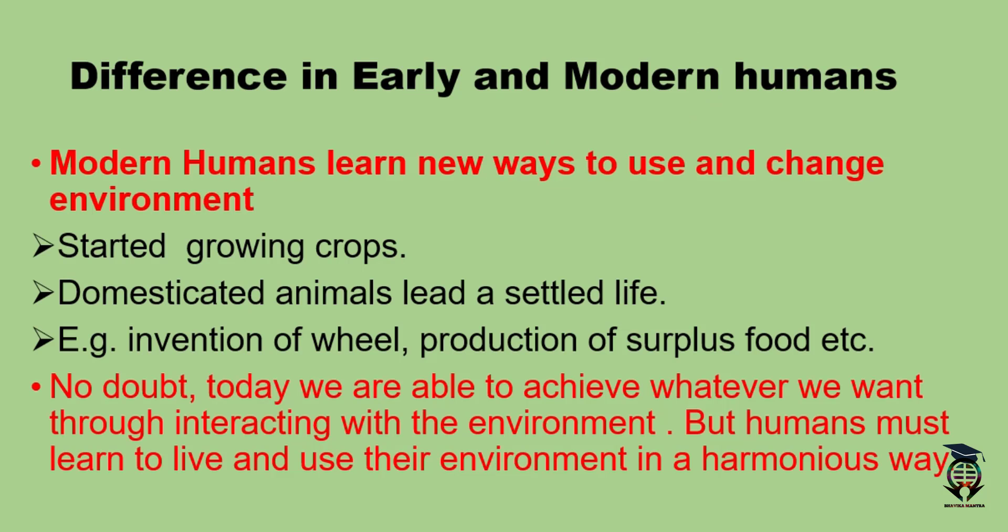Now we will learn what was the basic difference between early and modern humans. Modern humans learned new ways to use and change the environment. They interacted with and utilized their environment more, making changes to fulfill their needs. They started growing crops, whereas early humans did not do anything like that.